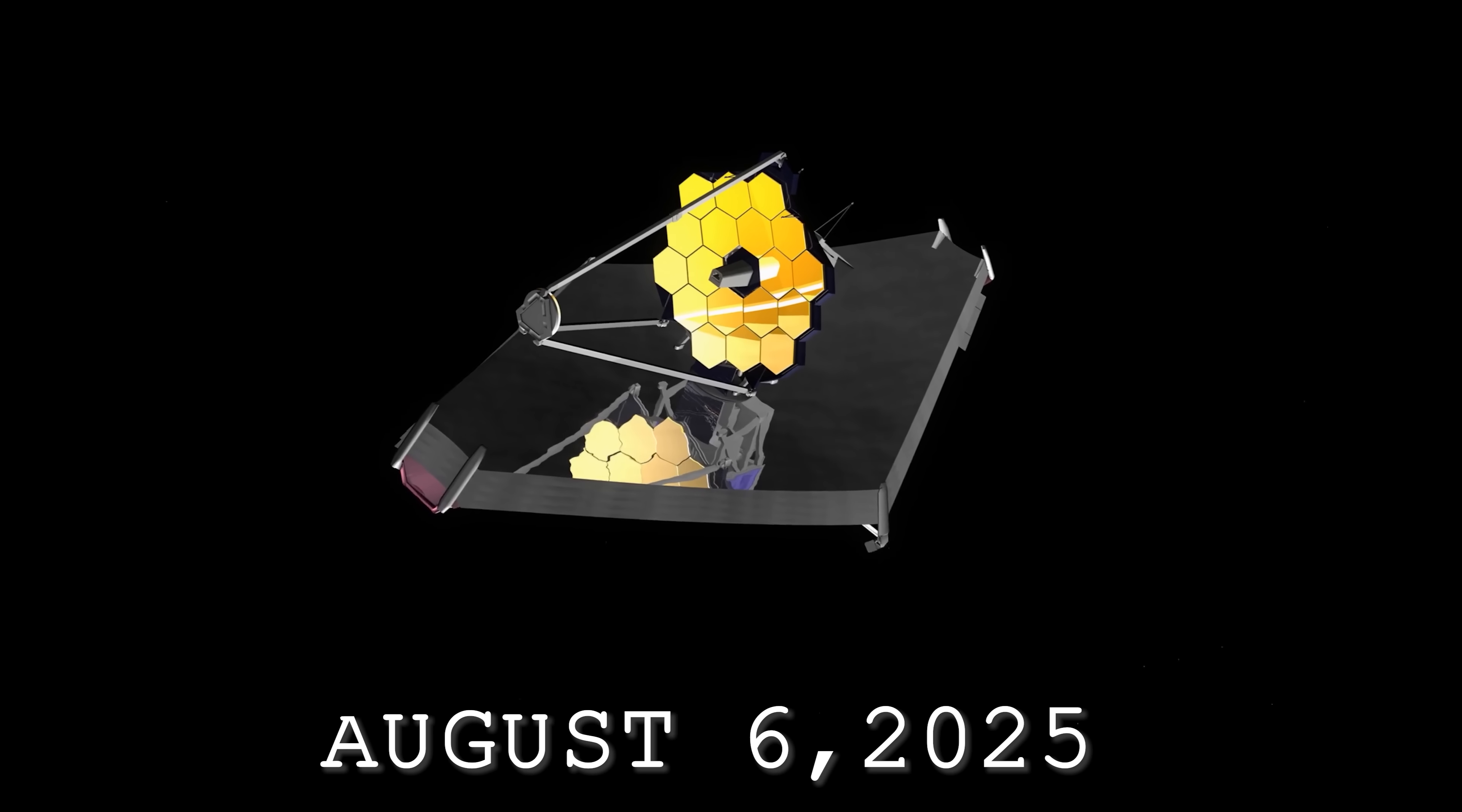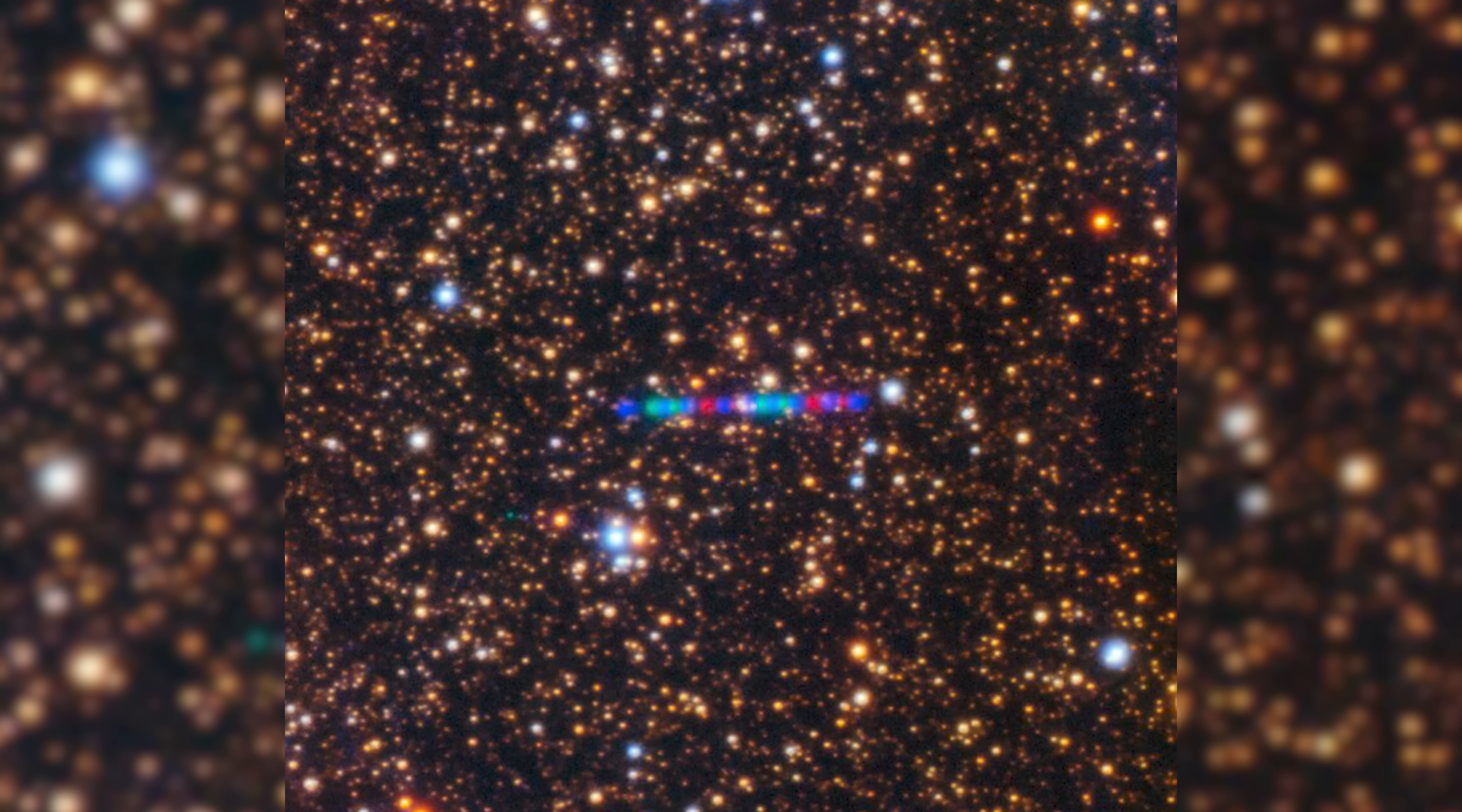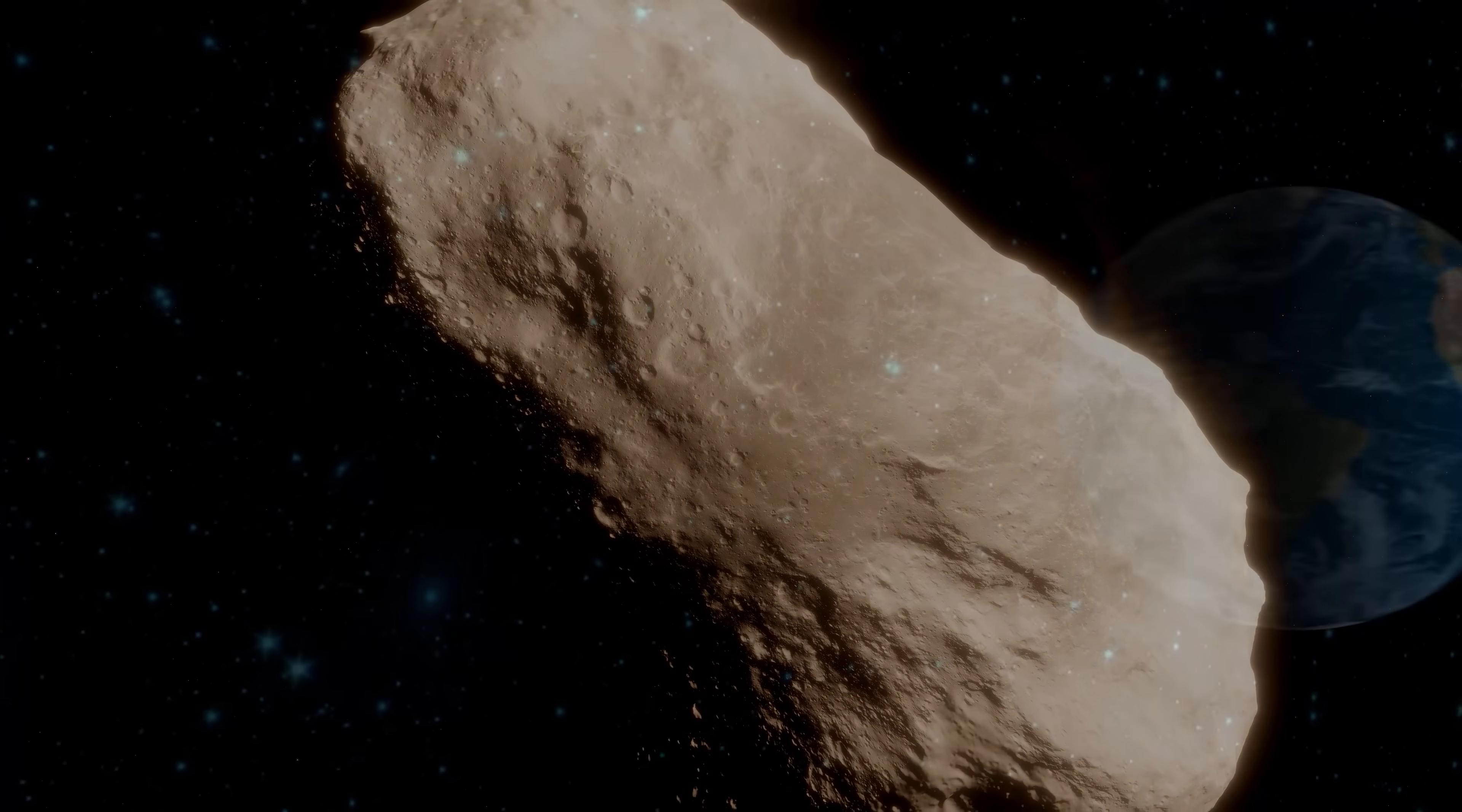On August 6, 2025, the JWST officially locked on to 3I Atlas, carrying out its first observation using the near-infrared spectrograph, NIR SPEC. This marks the beginning of a months-long research campaign aimed at uncovering the object's chemical composition, activity, and true origin before it reaches perihelion at the end of October. Specifically, on October 29, 3I Atlas will reach perihelion, the closest point to the Sun in its orbit.